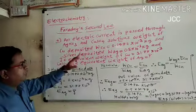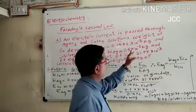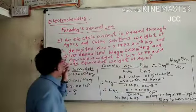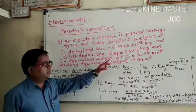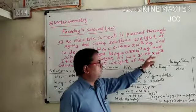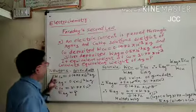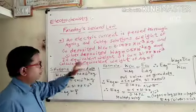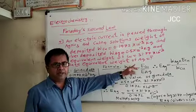And silver deposited, WAg = 0.5 × 10^-3 kg. Equivalent weight of copper is 31.772 × 10^-3 kg. Calculate the equivalent weight of silver.